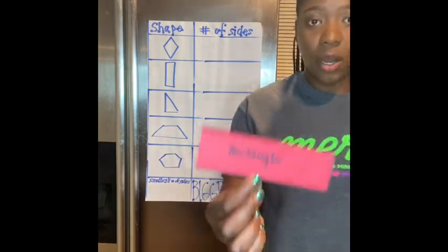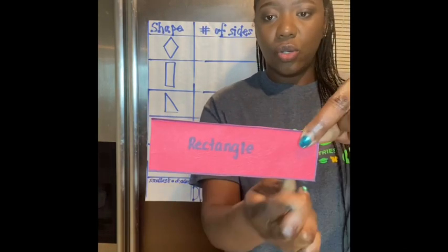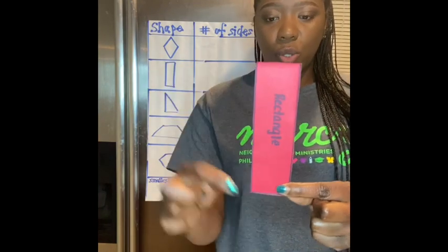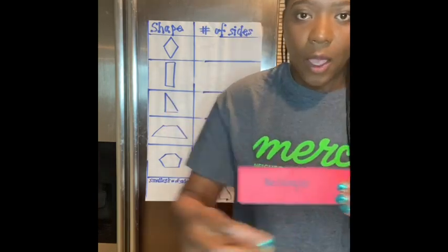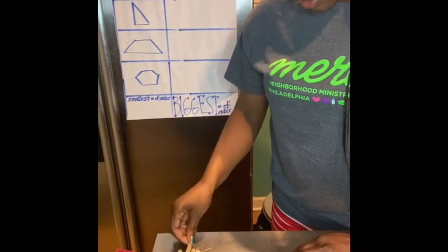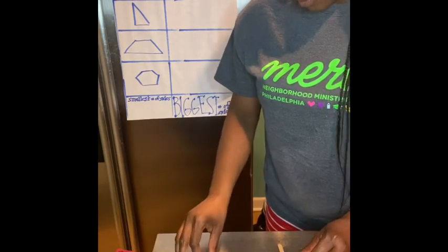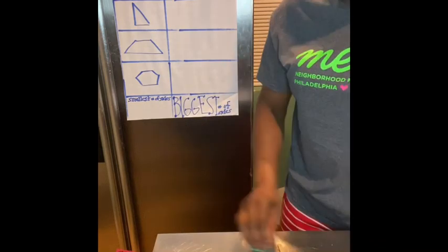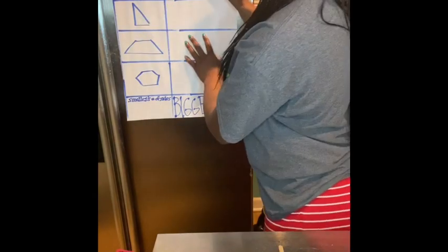So we're going to start with this shape. Anybody know what that shape is? It has two long sides and two short sides. What shape is that? We're going to count the number of sides using the popsicle sticks. One, two, three, four — four sides. The rectangle has four sides.